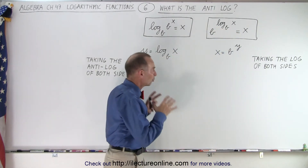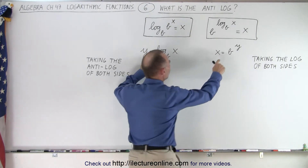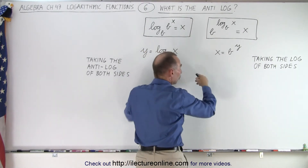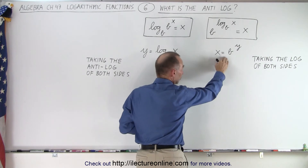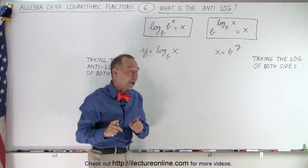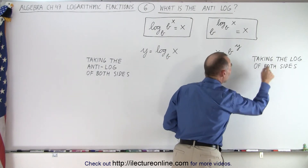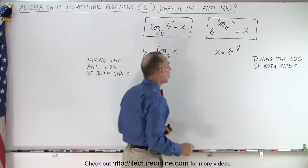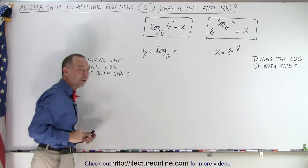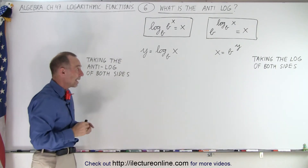Keep that in mind as we look at two equivalent equations in different forms: the exponential form and the logarithmic form. On the right side, we're going to take the log of both sides. On the left side, we're going to take the anti-log of both sides. That's how we're going to learn what we mean by the anti-log.